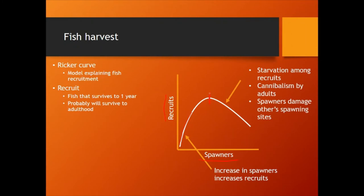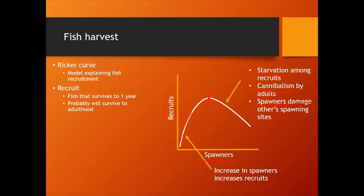At some point you get an inflection where, if you have too many adults, you get too many recruits — too many babies that starve each other out before they become recruits. Adult fish are very cannibalistic, so you get a lot of cannibalism because there are all these little babies around. Spawners can also damage each other's spawning sites — like largemouth bass fighting over spawning sites — and if there's not enough spawning sites, they mess up each other's nests. That kills a lot of the babies and you get this decrease in the curve.